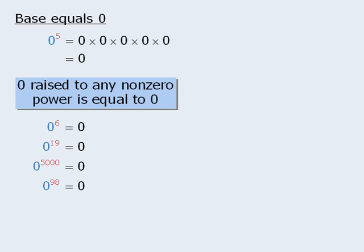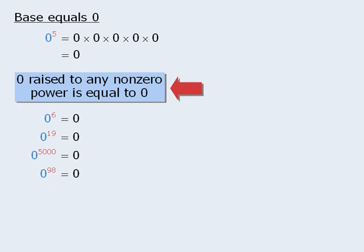You may have noticed an unusual condition in this last property: for the property to hold, the exponent must not be equal to 0. So what happens if we raise 0 to the power of 0? There is no agreement among mathematicians regarding the value of 0 to the power of 0. You can rest assured that you will never be tested on this value.